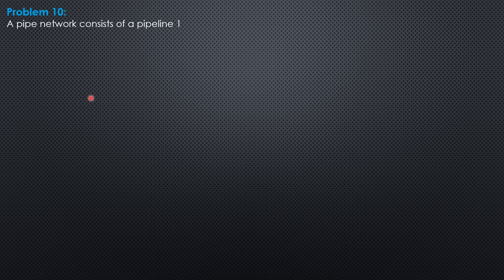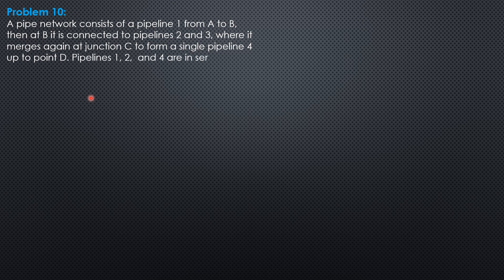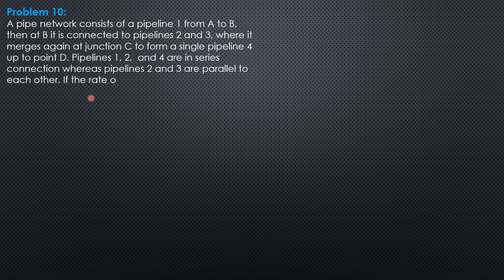Problem 10. A pipeline network consists of a pipeline 1 from A to B, then at B it is connected to pipelines 2 and 3, where it merges again at junction C to form a single pipeline 4 up to point D.